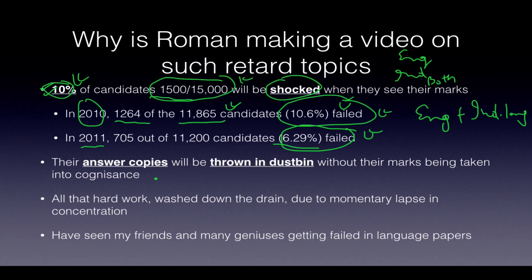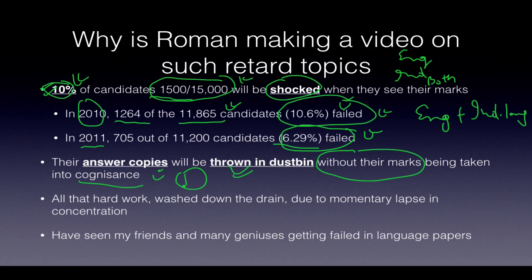What happens is your copies are checked but they don't calculate your marks — they will straight away be thrown in the dustbin or burned. Your marks will not be revealed, and they will not take cognizance of your marks. You will never know how you performed, and in the next attempt you will never know your weakness. You might be topping the exam, might be getting rank 1, but it will not be checked because all that hard work, all that late night burning the midnight oil, will be washed down the drain — because you had a momentary lapse in concentration and did not study.